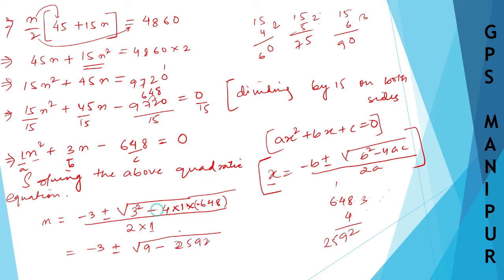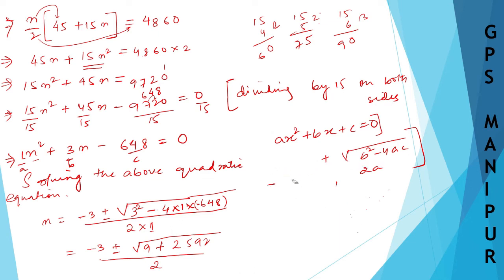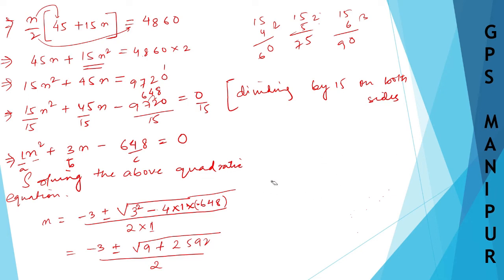Minus into minus is plus. So under the root we get 2592 plus 9, which equals 2601. So N is equal to minus 3 plus or minus root over 2601, divided by 2.